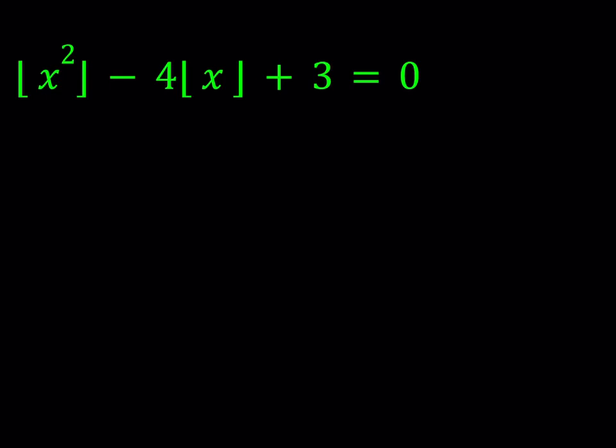Hello, everyone. In this video, we'll be solving a floor function equation. If you like this video, hit the thumbs up button, also comment and subscribe. We do have the floor value of x squared minus 4 times the floor value of x plus 3 is equal to 0.